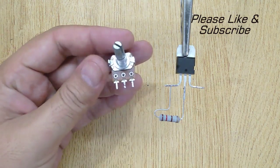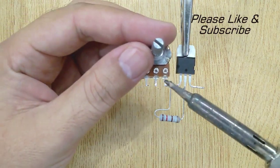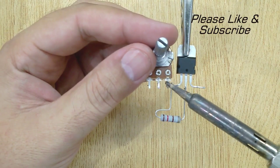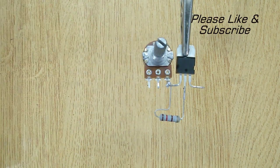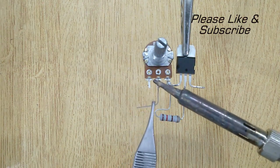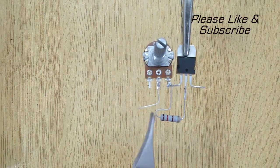Now solder the first pin of LM317 with the VCC pin of the potentiometer. And at last, solder a piece of wire with the middle pin of the potentiometer.